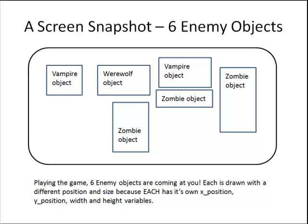Are you getting the picture? If you are playing the game and you enter a room with three zombies, one werewolf, and two vampires, there are six enemy objects in computer memory. Each object's X position and Y position variable will determine where they are in the room, and the status variable will determine if they are moving or crumpled up dead on the floor. Happy hunting! And with that, let's move on to part two of this video series.